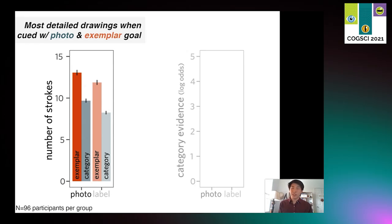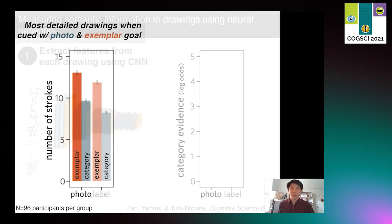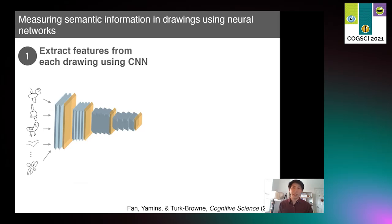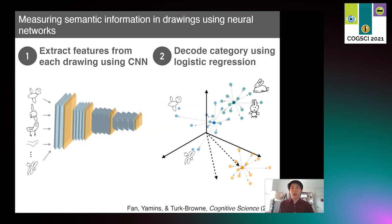These results essentially give us a manipulation check that a basic physical property of these drawings, how many strokes they consist of, differ across conditions. But what we're really interested in is the semantic information contained within these drawings. To measure what kind of semantic information they contained, we leveraged prior work validating the use of deep convolutional neural networks to extract high-level perceptual feature vectors from each drawing. We operationalized the semantic information in each sketch as the amount of evidence for the target concept that was contained in the drawing.